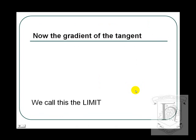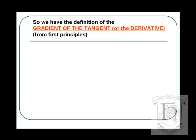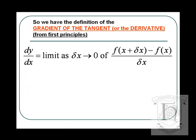What we're doing is taking a limit. We need to make delta x become very, very small. So, the gradient of the chord becomes closer and closer to the gradient of the tangent, as delta x tends to zero.